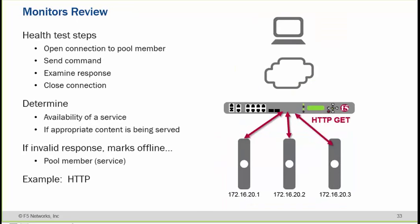Now we are looking at monitors. When a client sends traffic to the virtual server, we need servers behind the virtual server — the same site is hosted on multiple servers so that traffic is load balanced. F5 picks one of those servers based on load balancing, but before sending traffic, F5 must know the health of its servers.